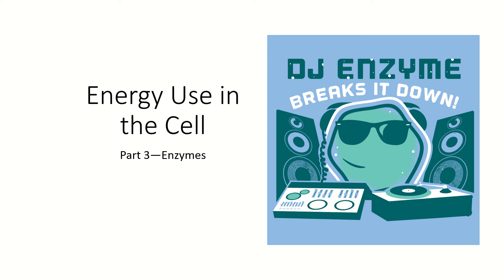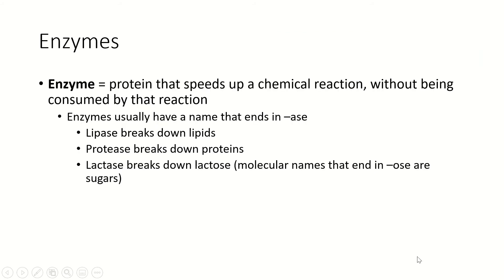Enzymes — just remember, DJ enzyme breaks it down. Enzymes are really important in biological systems for breaking things down, also for putting things back together. So what are enzymes? Enzymes are proteins — that is really important to remember. They are protein molecules that speed up a chemical reaction without themselves being used by the reaction. They aren't part of the reaction; they just make the reaction happen faster. Much like a matchmaker — doesn't get involved in a relationship, just introduces two people and lets the sparks fly. The enzyme is the matchmaker.